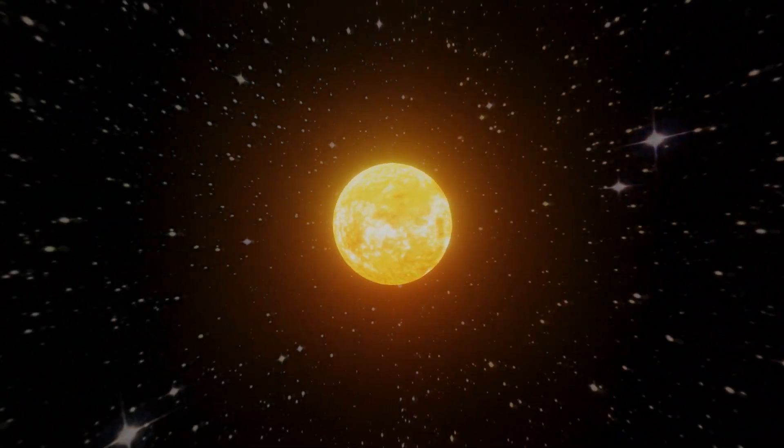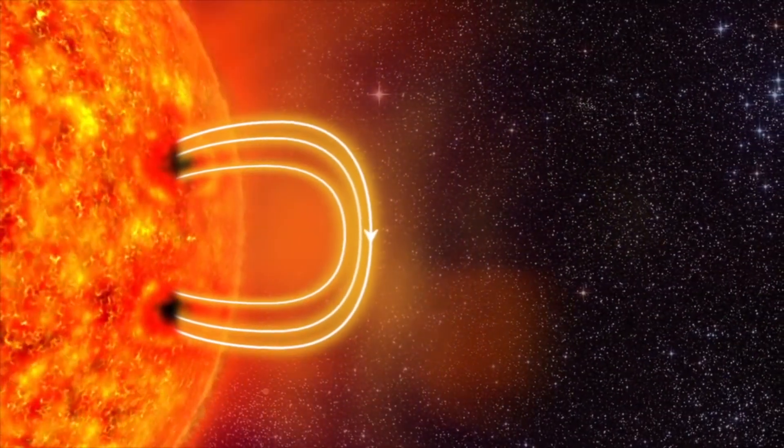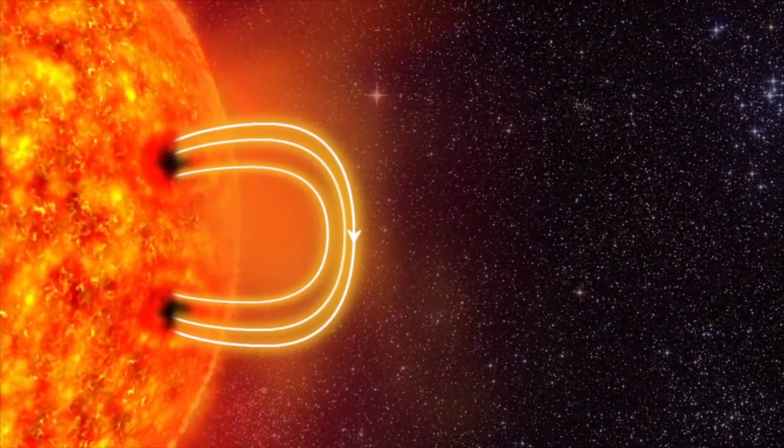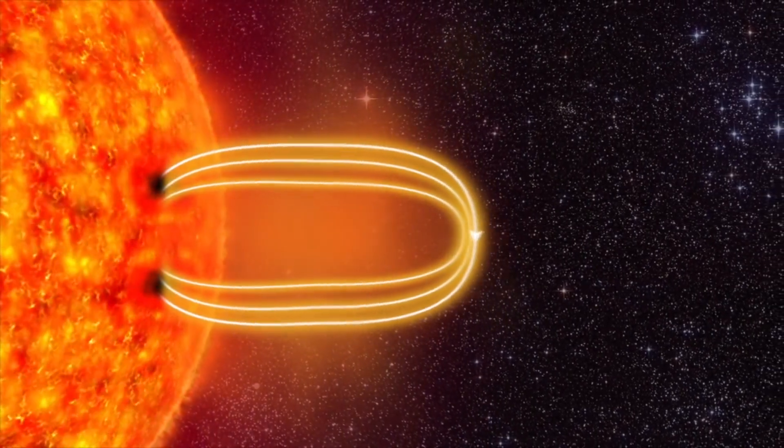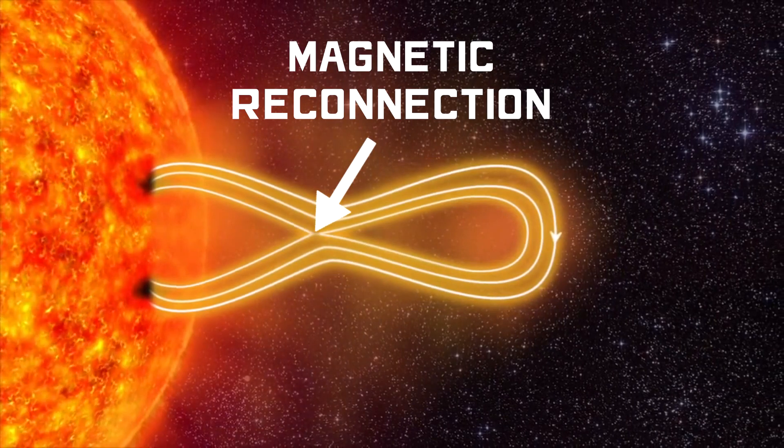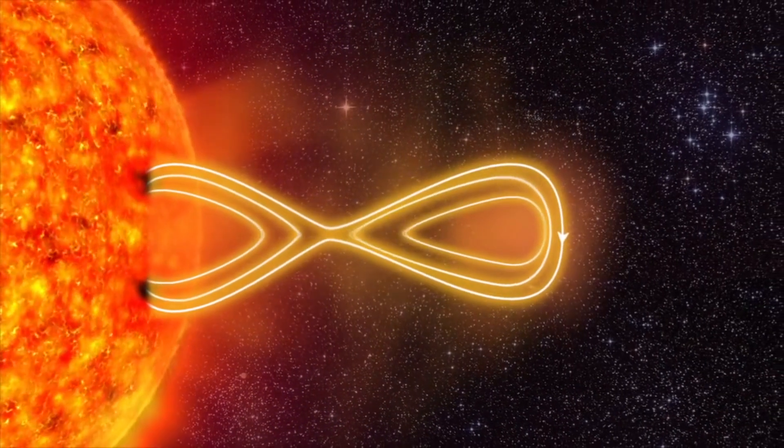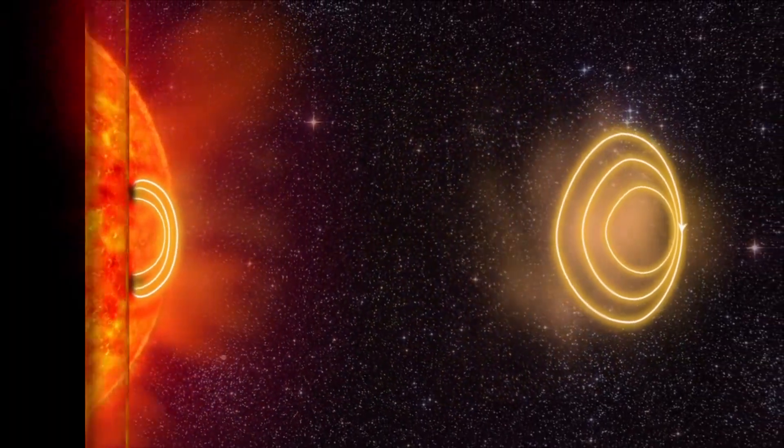So how are these CMEs released? Well, as the Sun rotates and its plasma convects, the field lines twist and tangle into a contorted group, and as pressure from the electrical field forces opposing magnetic field lines together, a phenomenon called magnetic reconnection occurs, which is key to both the release of CMEs from the Sun, as well as the formation of the aurora itself.